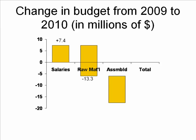Our assembled parts costs are also going to be reduced by 11.7 million dollars because our efficiencies have grown at our purchasing level and with our suppliers, so they're able to reduce our costs. In total, our budget for next year is 17.6 million dollars less than it is this year.